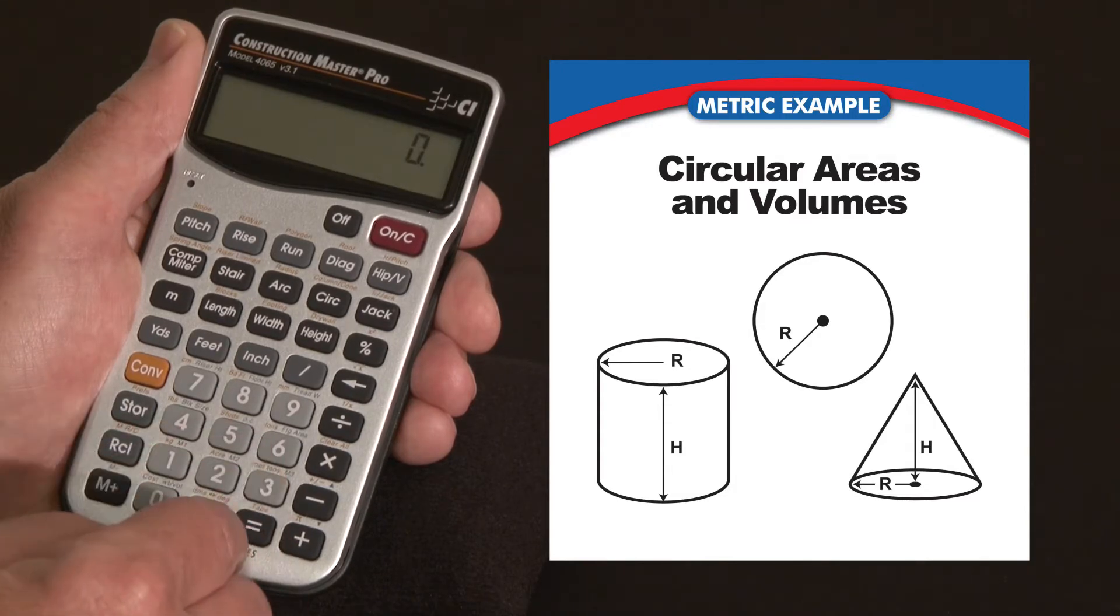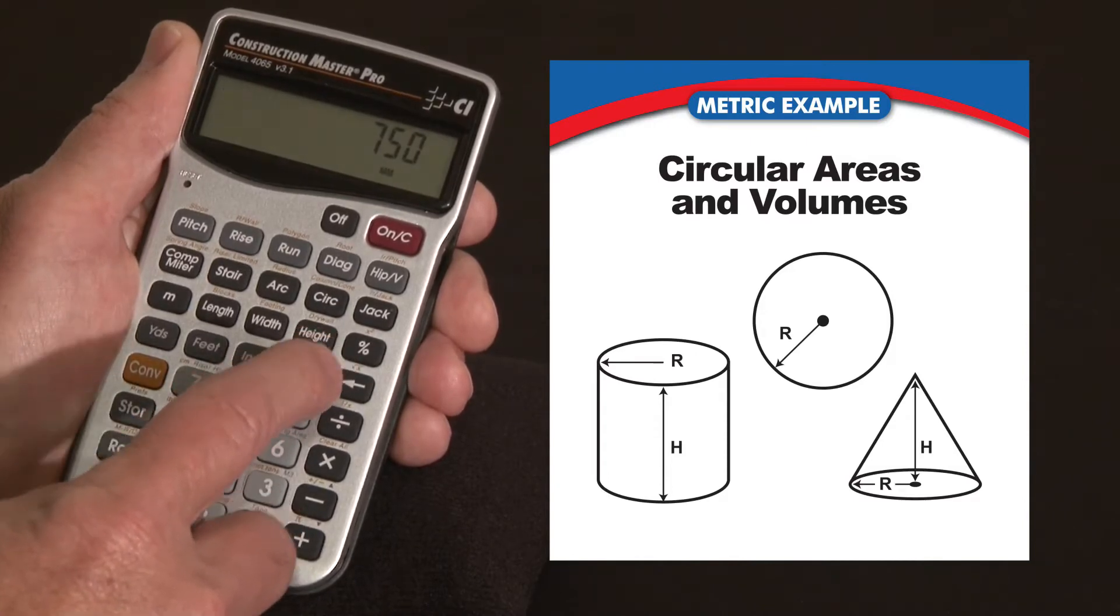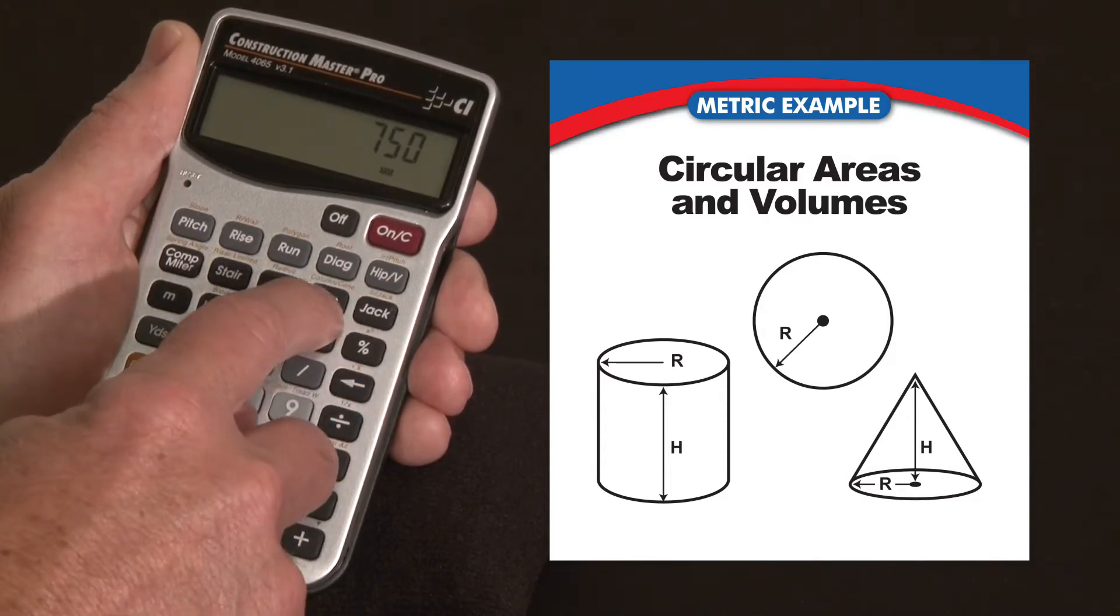Let's put in something like 750 millimeters and enter that as the diameter of a circle.